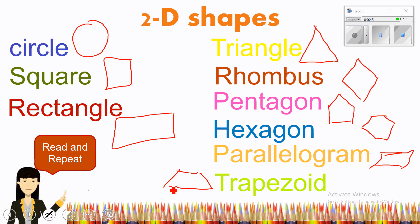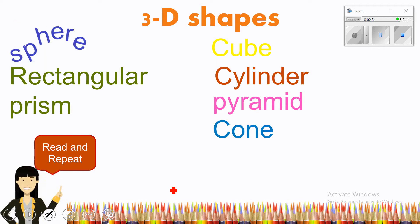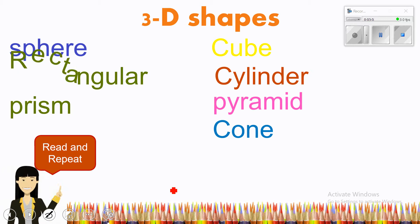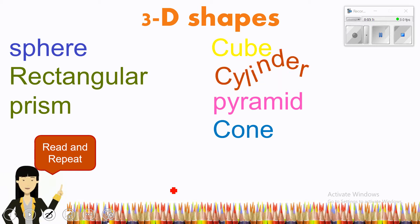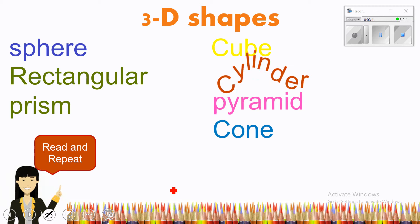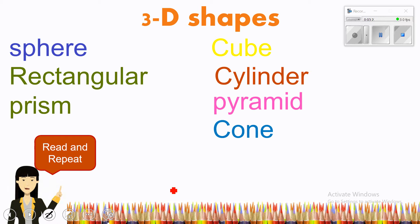Let's go to the 3D shapes. We have: sphere, rectangular prism, cube, cylinder, pyramid, and cone. Let's remember how these look.